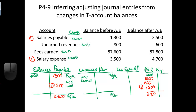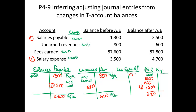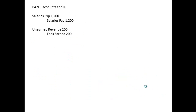When we look at unearned revenue, we know that's a liability account where customers have paid us cash in advance. If we see that the account went down from $800 to $600, we can see that we earned $200 of those prepaid amounts — meaning we provided goods or services for $200. So fees earned went from $87,600 before the adjusting entry up by $200 to $87,800 after.